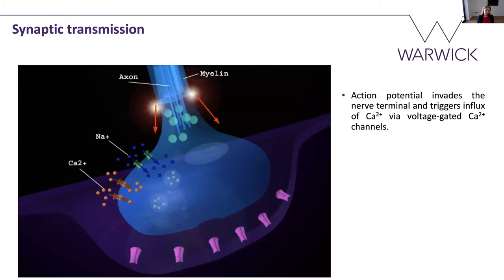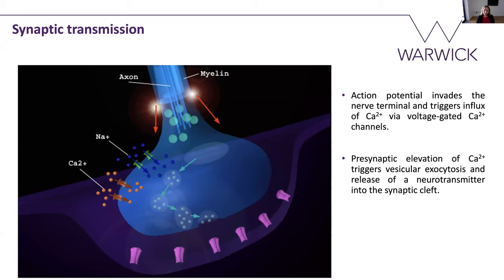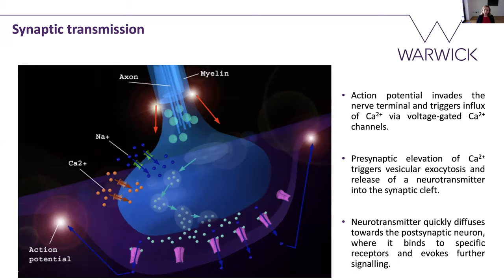Let me quickly remind you of the main processes behind synaptic fusion. When the action potential invades the presynaptic terminal, we have activation of voltage-gated calcium channels and calcium influx into the terminal. This presynaptic elevation of calcium triggers vesicular exocytosis, the neurotransmitter is released into the synaptic cleft, and this neurotransmitter quickly diffuses to the postsynaptic side. I'll focus on this vesicular exocytosis process, during which synaptic vesicles filled with neurotransmitters are observed.